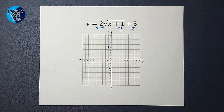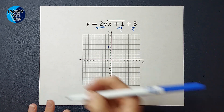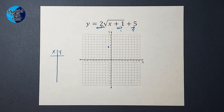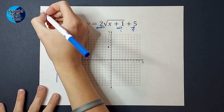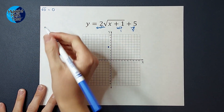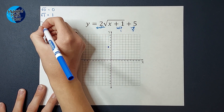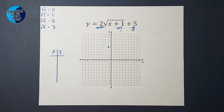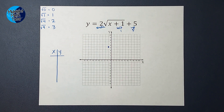If your teacher wants you to plug in more points, we're going to do that now by making a table. Since we are working with square roots, not all numbers have nice square roots. I'll remind myself of the easy ones: the square root of 0 is 0, square root of 1 is 1, square root of 4 is 2, square root of 9 is 3. Numbers in between have square roots, they're just not fun to work with. So I want to make what's under the square root one of these nice numbers if I can.